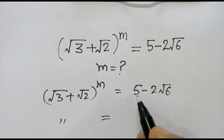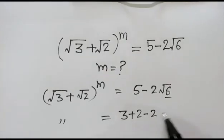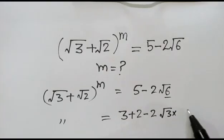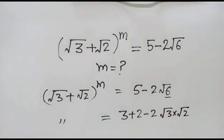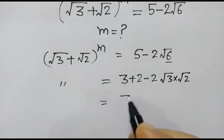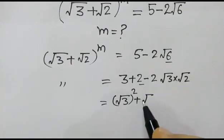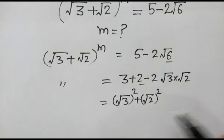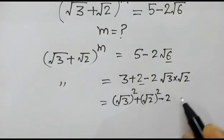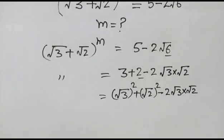Now, 5 can be written as 3 plus 2, minus 2 square root of 6, which equals square root of 3 times square root of 2. Then, 3 can be written as square root of 3 squared, plus 2 as square root of 2 squared, minus 2 times square root of 3 into square root of 2.